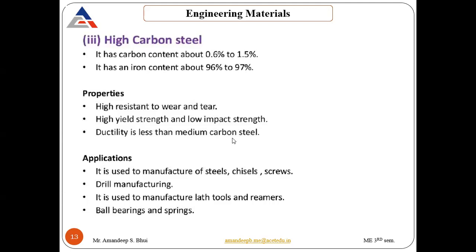After medium carbon steel, we have high carbon steel. The carbon content is in the range of 0.6 to 1.5%; 96 to 97% is iron, and the rest — sulfur, phosphorus, manganese — are in smaller percentages. Properties: it is highly resistant to wear and tear, has very good wear resistant properties, high yield strength and low impact strength.